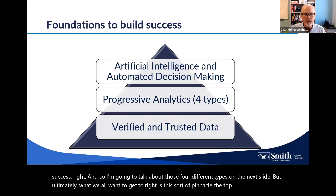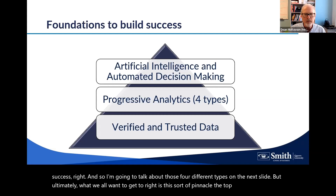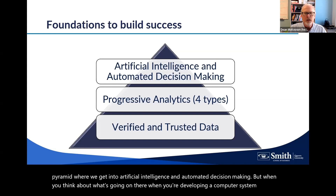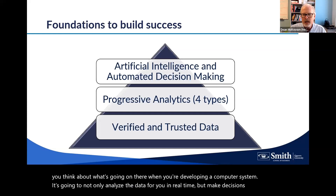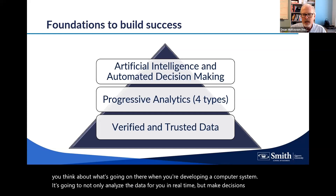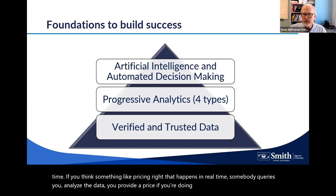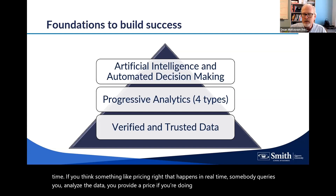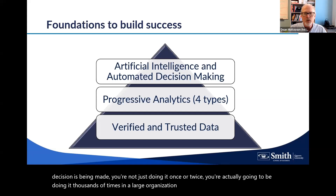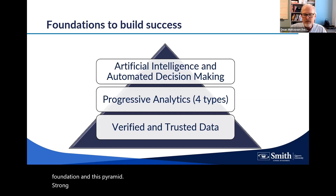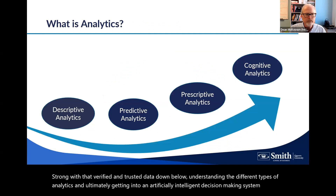Ultimately, what we all want to get to is the top of the pyramid: artificial intelligence and automated decision-making — a computer system that analyzes data in real time and makes decisions in real time. Think about pricing: if the wrong decision is being made, you're not doing it once or twice, you're doing it thousands of times in a large organization. So it's really important that the foundation is strong with verified and trusted data, understanding the different analytics types, and building up to an AI decision-making system.